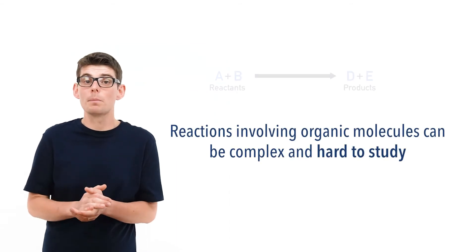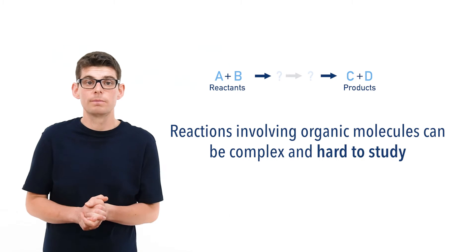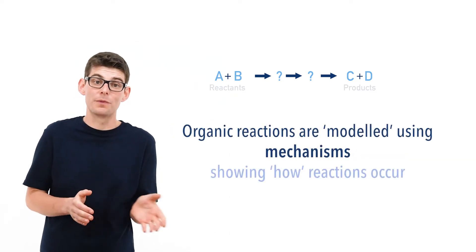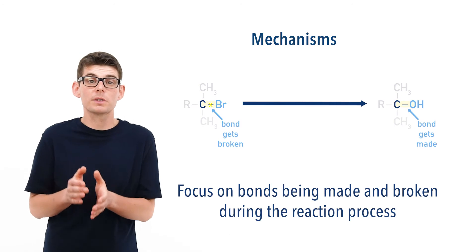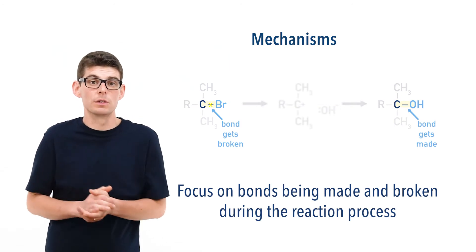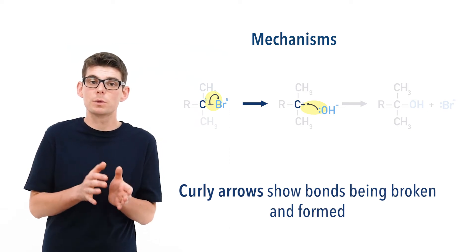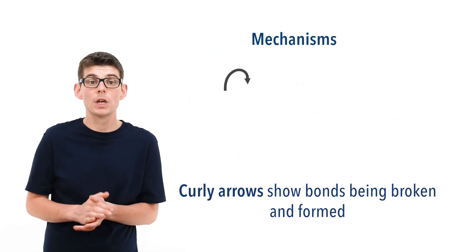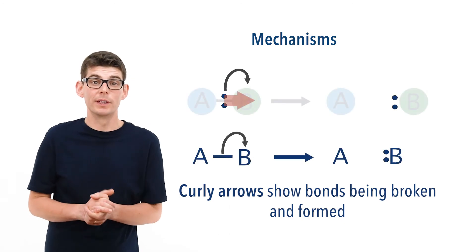As organic molecules can be complex, reactions in organic chemistry can be hard to study, and some follow complicated pathways in which a molecule may change several times during a single reaction before a final product gets made. To try and understand what's going on, organic reactions are modelled using things called mechanisms, showing how and hopefully why certain reactions occur. We focus on how bonds get broken and made to form a product from a starting reactant, and the steps that may occur in the reaction as a result. Curly arrows are used to show the forming and breaking of bonds by considering the movement of electrons between atoms, as covalent bonds are effectively made up of a pair of electrons. One arrow with a full arrowhead always represents a pair of electrons, and the arrows are drawn with the arrowheads pointing in the direction the electrons move in.